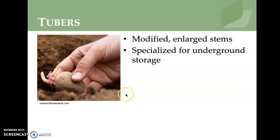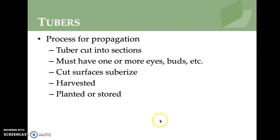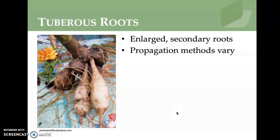Tubers — like potatoes — are modified, enlarged stems specialized for underground storage. If you've left potatoes on your counter too long, you've seen them start to grow roots at the eyes. You can cut a potato and plant it to grow more potatoes, as long as each cut section has one or more eyes. They're often grown using a hill or mound system.